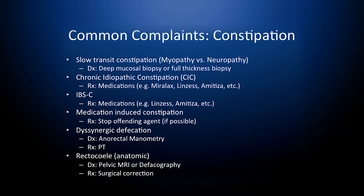But the most common complaint is obviously constipation, which can be a very complex symptom. Causes include slow transit constipation, which can be either a myopathy or neuropathy — diagnosis is typically made by deep mucosal biopsy or full thickness biopsy. Chronic idiopathic constipation, for which medications such as Miralax, Linzess, Amitiza, or other medications are available. Irritable bowel syndrome constipation subtype. Medication-induced constipation, for which you stop the offending agent. Dyssynergic defecation, for which you need anal rectal manometry to make the diagnosis, and we treat this with physical therapy. Or it can be an anatomic variant such as a rectocele — diagnosis usually includes a pelvic MRI or defecography, and treatment is surgical correction.